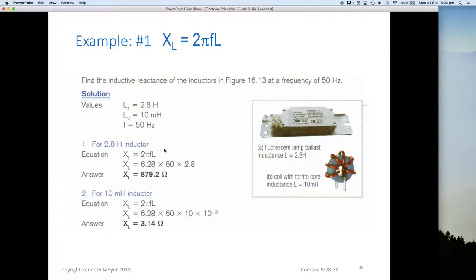We're going to use the equation XL equals 2πfL. I hope you took the time to pause the video and find that on your equations sheet so you know where it is. XL is 6.28 multiplied by 50 times 2.8, gives us 879.2 ohms for our large ballast type inductor.